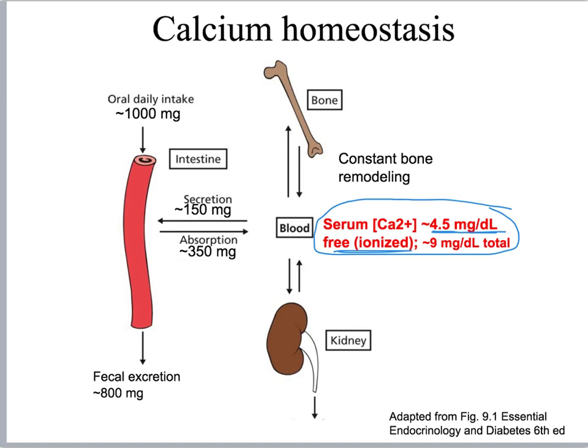On many charts for serum concentrations, the total concentration of calcium is given as about 9 mg per deciliter. About half of all the calcium in our blood is bound to something like the serum protein albumin or to phosphate, forming a calcium phosphate salt. Those bound forms of calcium are not measured — it's only the free ionized calcium that is reported.